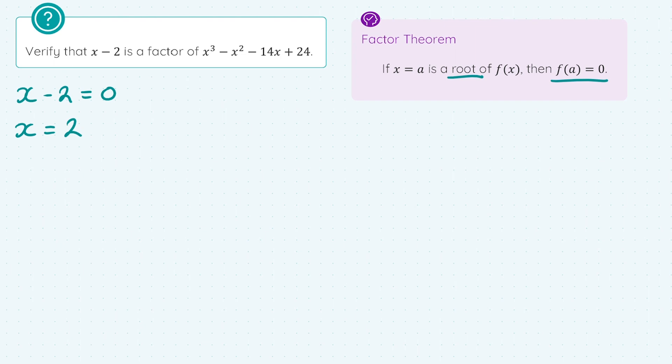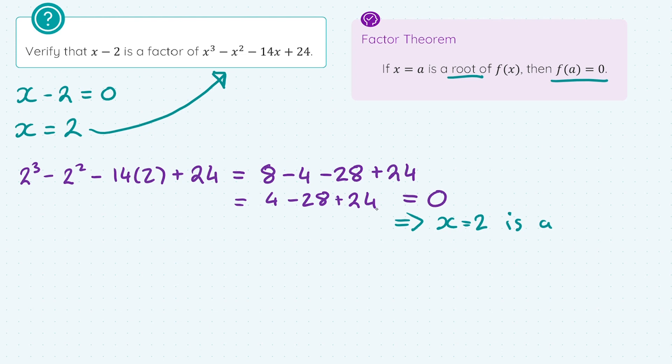And by the factor theorem, if I sub x equals 2 into my function, I know it should equal zero. If it does equal zero, it is a root and it is a factor. So let's see if that happens. We get a result of zero. And because we get a result of zero, this tells us that x equals 2 is a root. And because x equals 2 is a root, that also tells us that x minus 2 is a factor. So that's how we can verify factors. We transform it into the root, and then we take the root, sub it into the function, and it should equal zero. That's the factor theorem. You sub the root into the function, and it will always equal zero if it is a root.